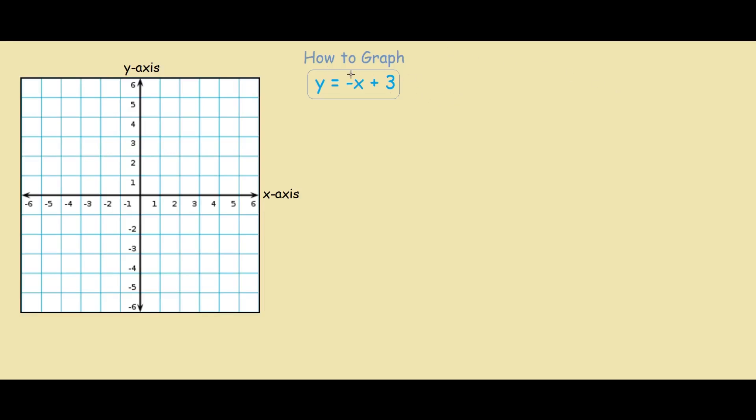To graph this line y equals negative x plus 3, we need two points on the graph. One of those points is on the y-axis, and we call this point the y-intercept.